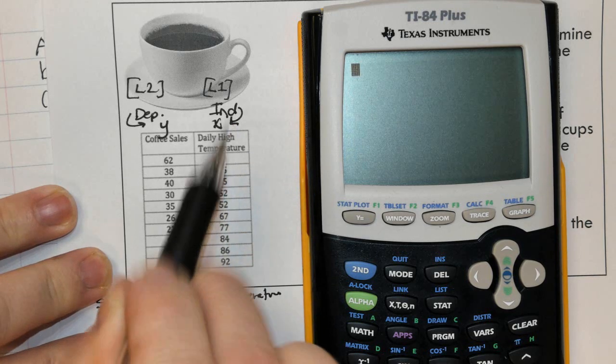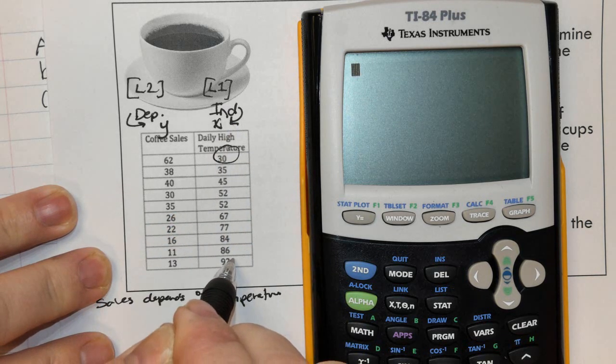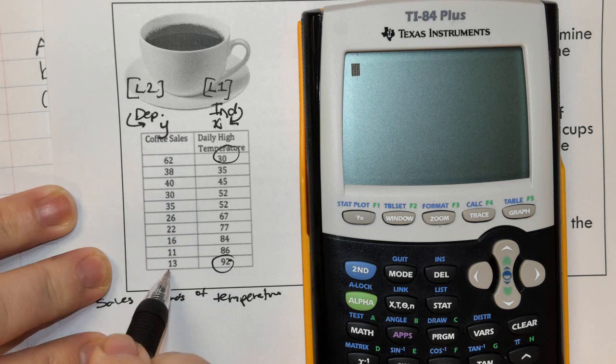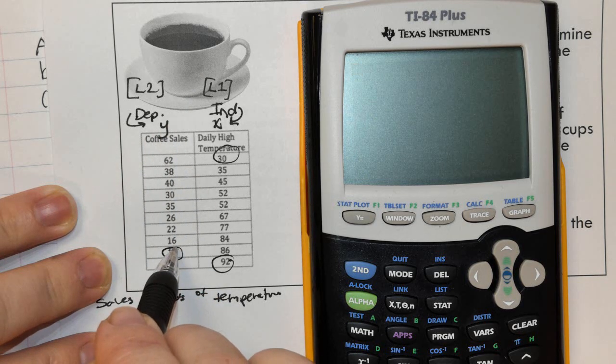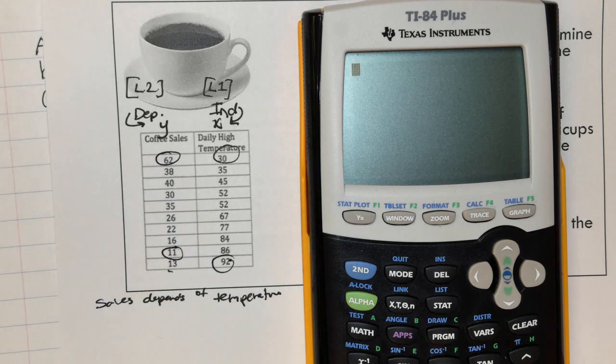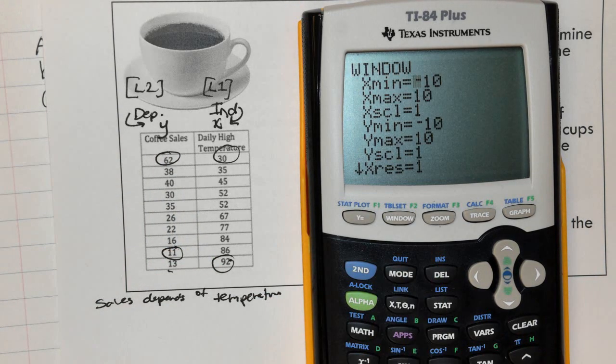Temperature. The lowest temperature I see is 30. The highest I see is 92. In this list, the lowest Y value is 11 and the highest I see is 62. Now why does that matter? Please go to Windows.